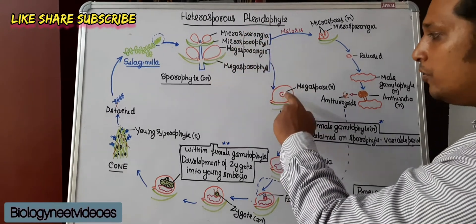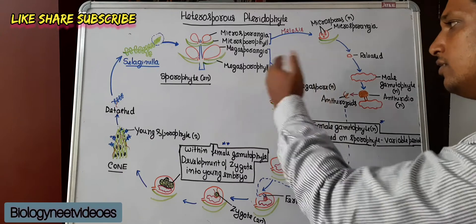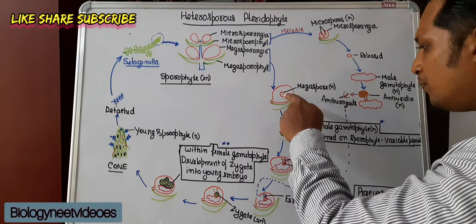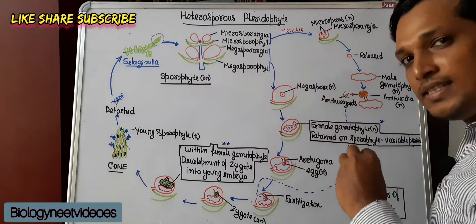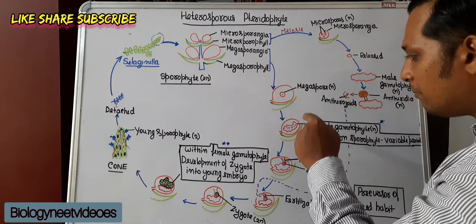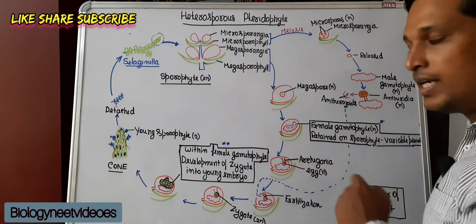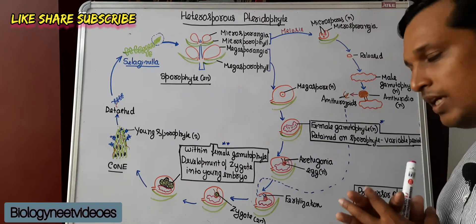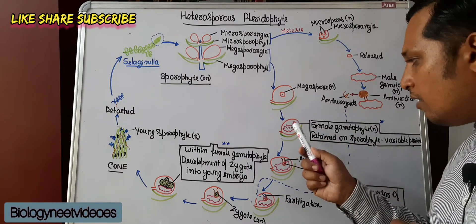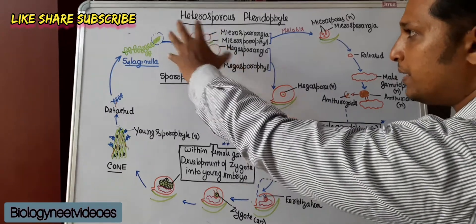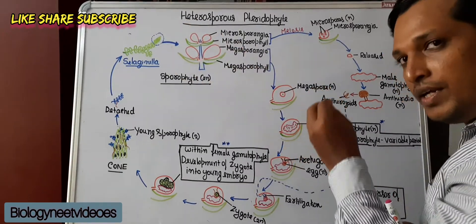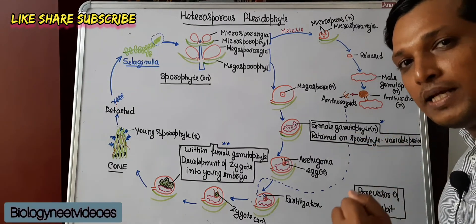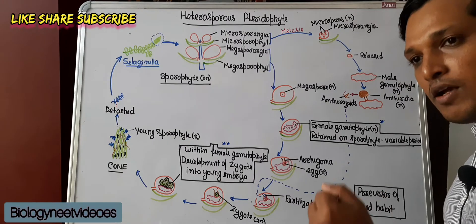What happens in the megasporangia? Megasporangia produce one functional megaspore, also resultant of meiosis, so the megaspore is haploid (n). The megaspore is not released at all. Instead, the megaspore will germinate into the female gametophyte inside the megasporangium only. The female gametophyte is retained in the sporophyte for a variable period — and that is a precursor feature of seed habit.